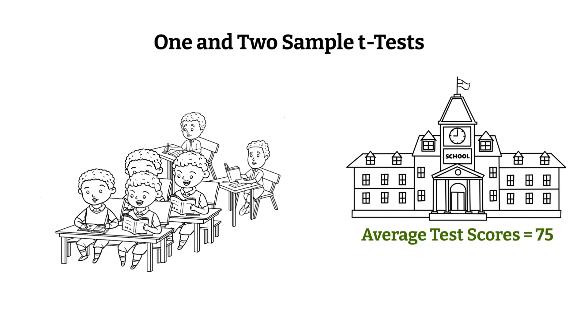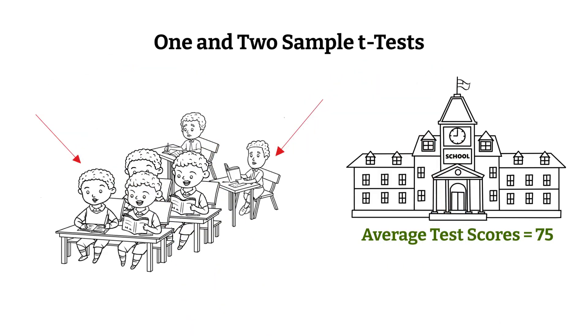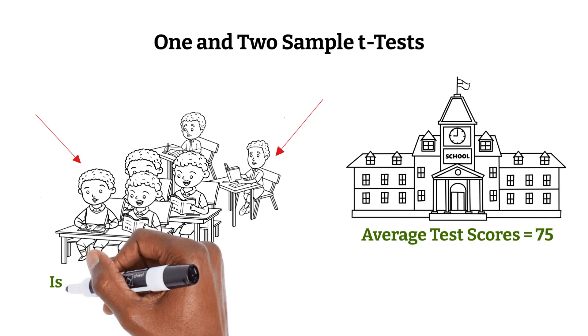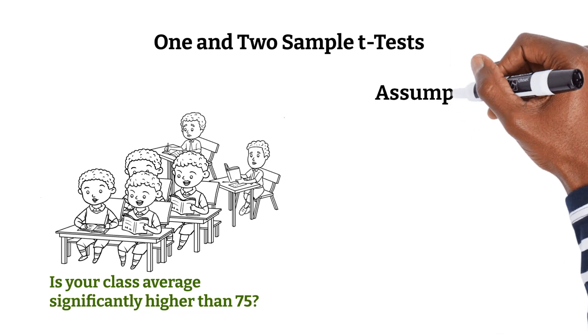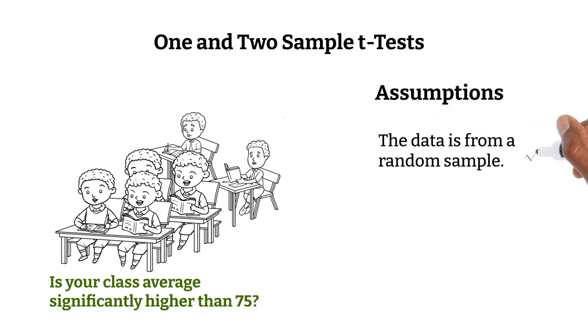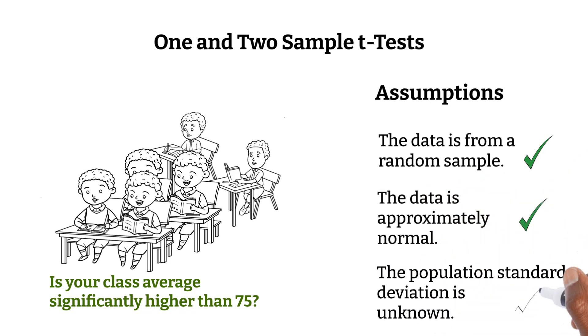Let's start with the one-sample t-test. Let's say a school claims their average score is 75, but you think your class is doing better. So you gather data from a sample of students in your class. The question is, is your class's average significantly higher than 75? Before we begin, we should check our assumptions. We assume the data is from a random sample, that it's approximately normal, and that the population standard deviation is unknown. Once our assumptions are in place, we can begin.